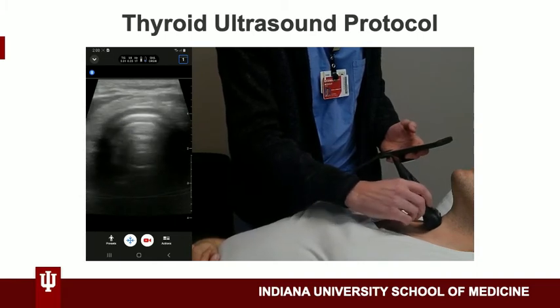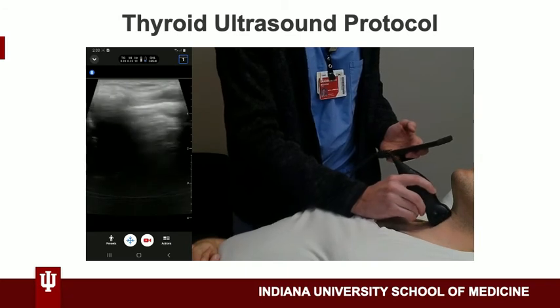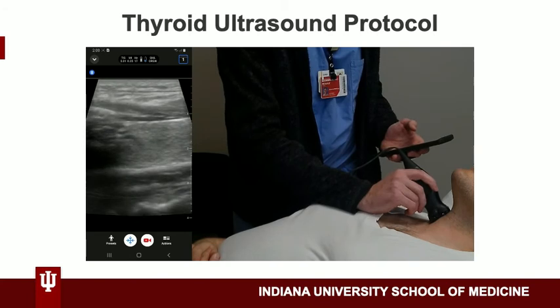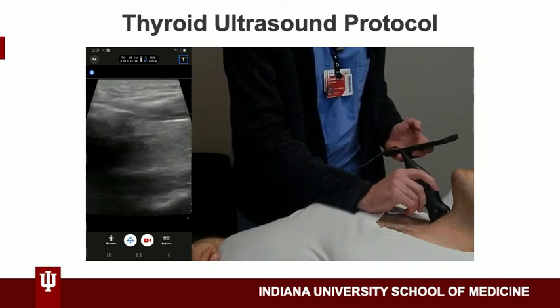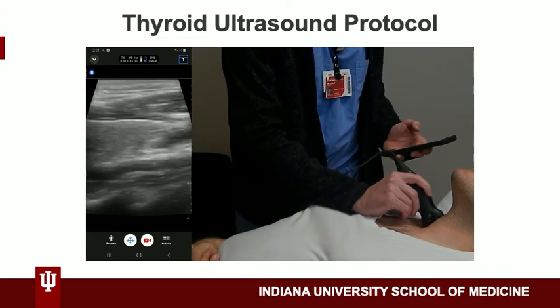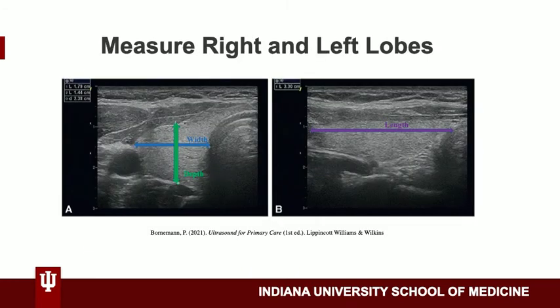After that, get a long axis view of the right lobe of the thyroid. When finished with the right lobe and the isthmus, do the same thing on the left side. When getting measurements of each lobe you will want to measure the width and depth in transverse, and length in long axis. You will also want to measure the isthmus in transverse.